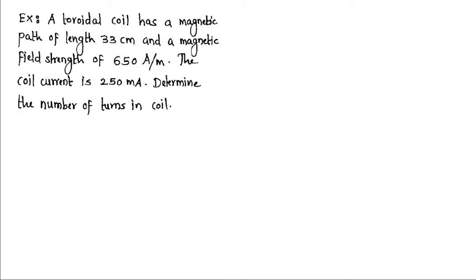Hello students, in this video we will solve a numerical problem about determining the number of turns in a coil if other relevant details about the coil are given. Let's start with the problem: A toroidal coil has a magnetic path of length 33 centimeters and a magnetic field strength of 650 ampere per meter. The coil current is 250 milliampere.